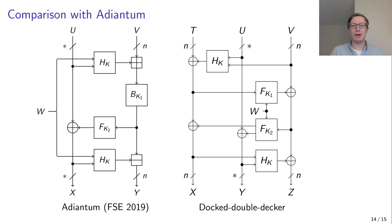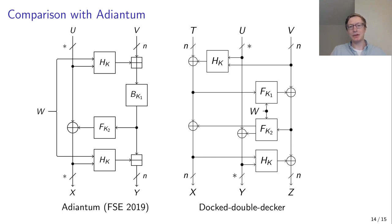Now I want to compare our construction to the previous construction Adiantum, which was presented at FSE last year. The goal of the Adiantum designers was to minimize the number of block cipher calls, as those are very slow on low-end Android devices. For this, they used a three-round Feistel network, but because that is not secure, they added an extra block cipher call in between. That block cipher call is only applied to a very small part of the data, while the bulk of the data on the left-hand side is unaffected by it.